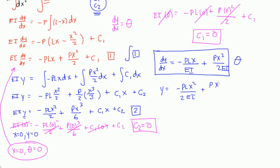Plus, PX cubed over 6EI, and then you have plus C1X, but since C1 is 0, then this whole term becomes 0. So, it's plus 0, and then plus C2, and that's also equal to 0. So, really, I'm just going to actually erase that. So, this is our equation for our deflection y.